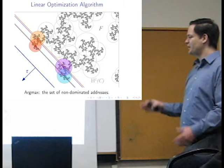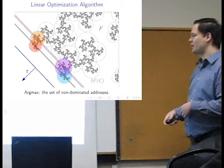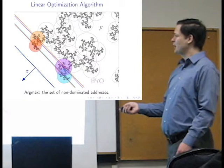So, basically, at every iteration, we'll have an argmax set of non-dominated addresses, and then we'll be refining that iteratively, or recursively. Okay. All right.